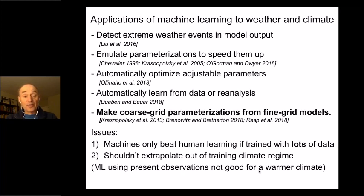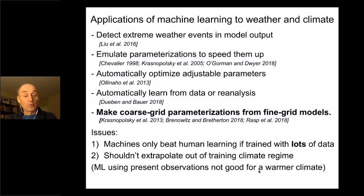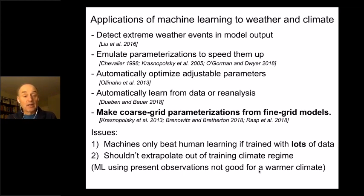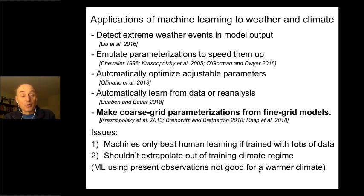Another challenge with machine learning for climate — one I don't think we've really solved — is that you can't take a machine learning algorithm and extrapolate it outside its training regime and expect it to work well. In particular, if you train a machine learning scheme entirely using present observations or simulations of present observations, that would not be good for a warmer climate. But if we use models to train, we can train a high-resolution model of a future climate and still use it to develop a coarse-resolution parameterization of that future climate.